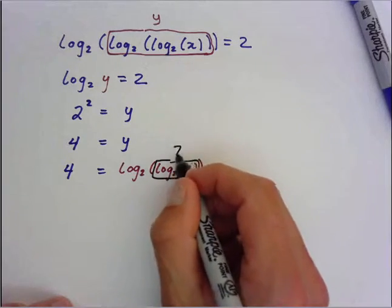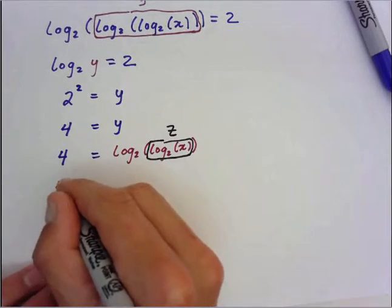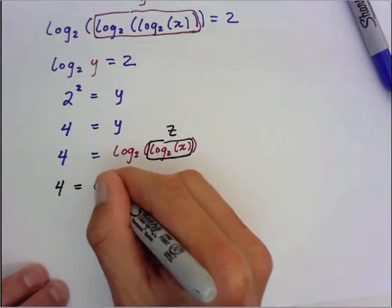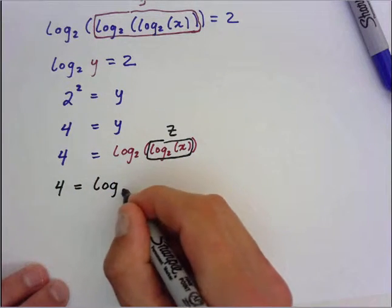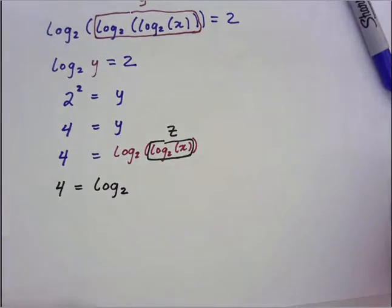Let's call this z. So that means we have 4 equals log base 2 of log base 2 of z. We changed its name.